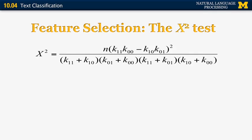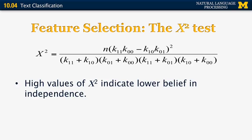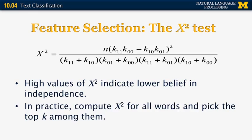The chi-square value is computed using a simple formula: plug in the diagonal values k00 and k11, and k10 and k01, along with N (the total count). High chi-square values indicate lower belief in independence, meaning the feature is informative. A chi-square value of 5, 6, or 10 means the feature is very good and should be included. In practice, compute chi-square for all features and pick the top K. Also include some features with relatively small but non-zero chi-square values that are likely to appear in the test set.